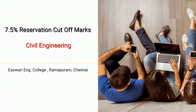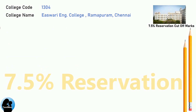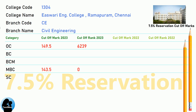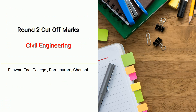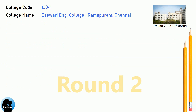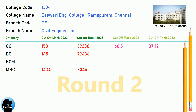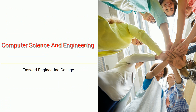DNA 7.5 Reservation Cut-Off for Eshwari Engineering College in Civil Engineering. DNA Round 2 Cut-Off for Eshwari Engineering College in Civil Engineering.